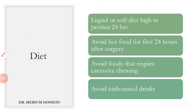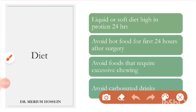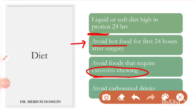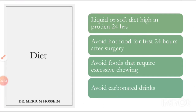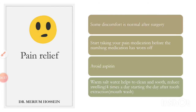Regarding diet: for the first 24 hours, the patient should stay on liquid diets, fresh juices, or soft foods that require minimal chewing. A protein-rich diet is encouraged for better and faster healing. Hot food and hot beverages should be avoided for the first 24 hours to keep the site cool. Foods requiring excessive chewing and carbonated drinks should also be avoided, as carbonated drinks can interfere with healing.